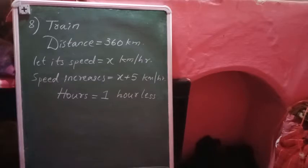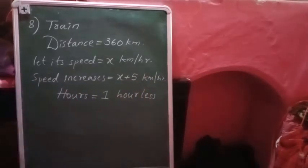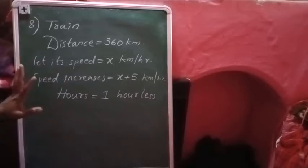We need to find out the speed of the train. So I have taken the speed as x kilometers per hour. They said that its speed increases five kilometers per hour more, which becomes x plus five kilometers per hour. Now you can observe, once the speed increases five kilometers per hour, then it takes one hour less to travel the same distance.